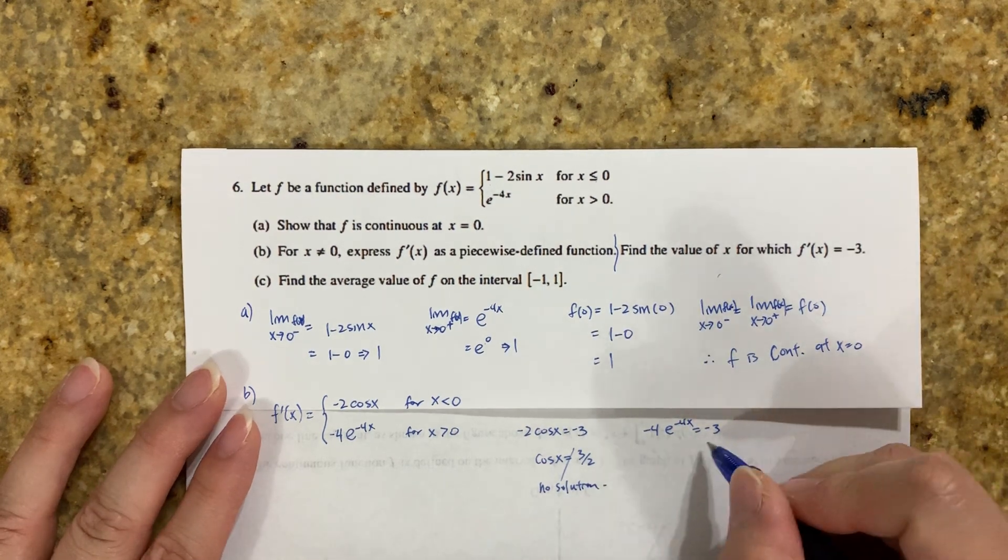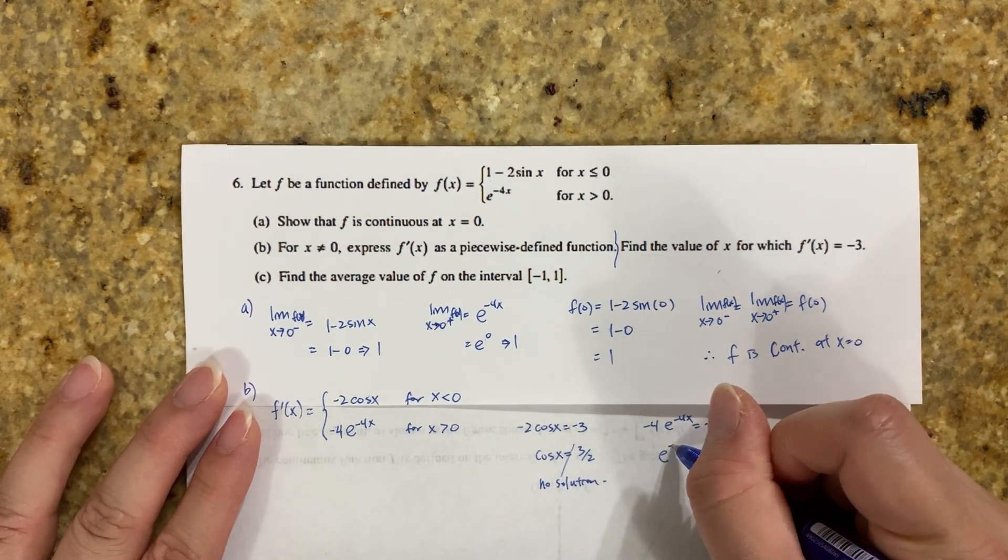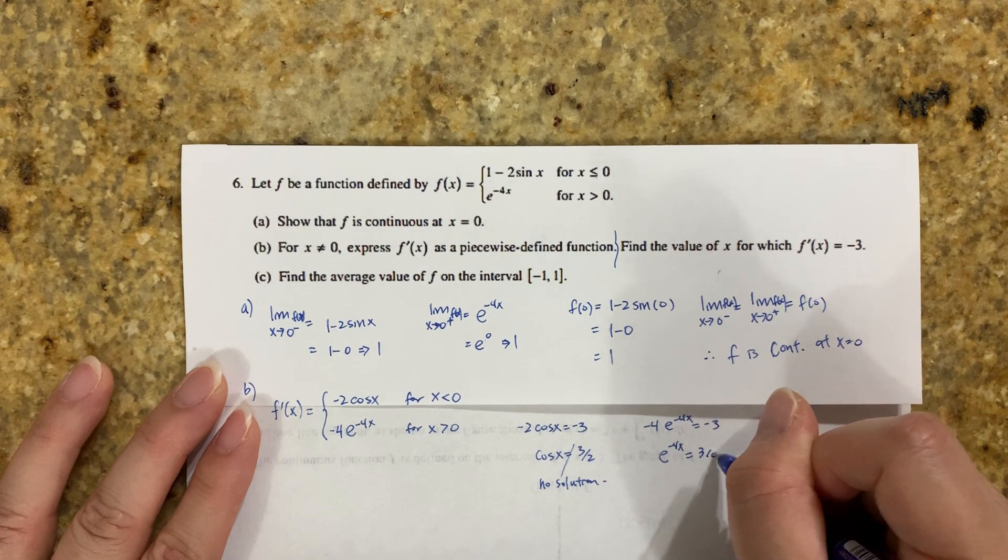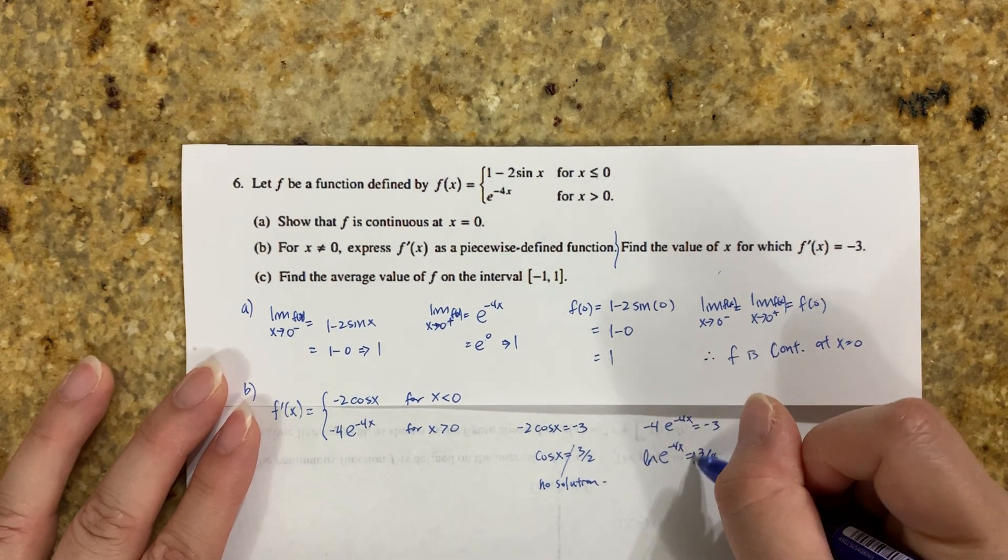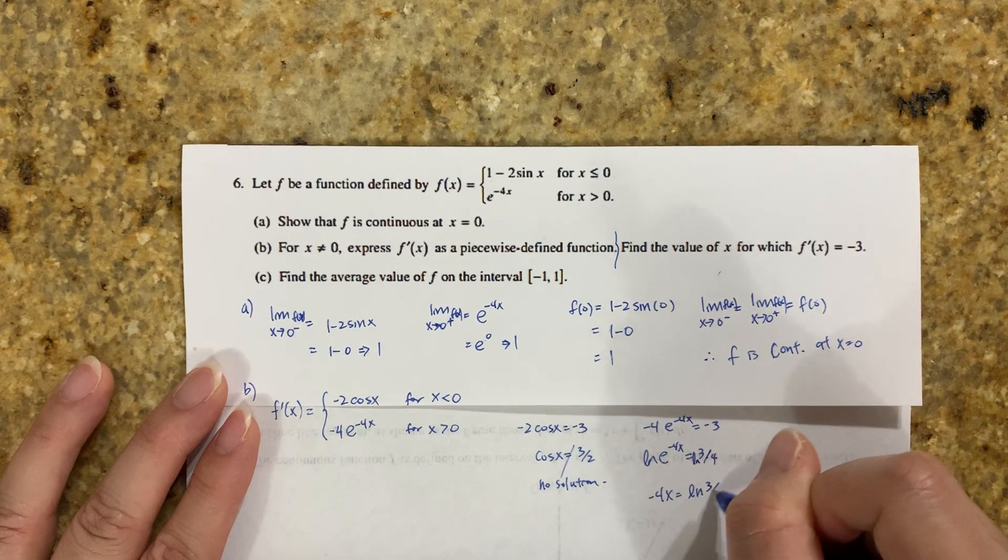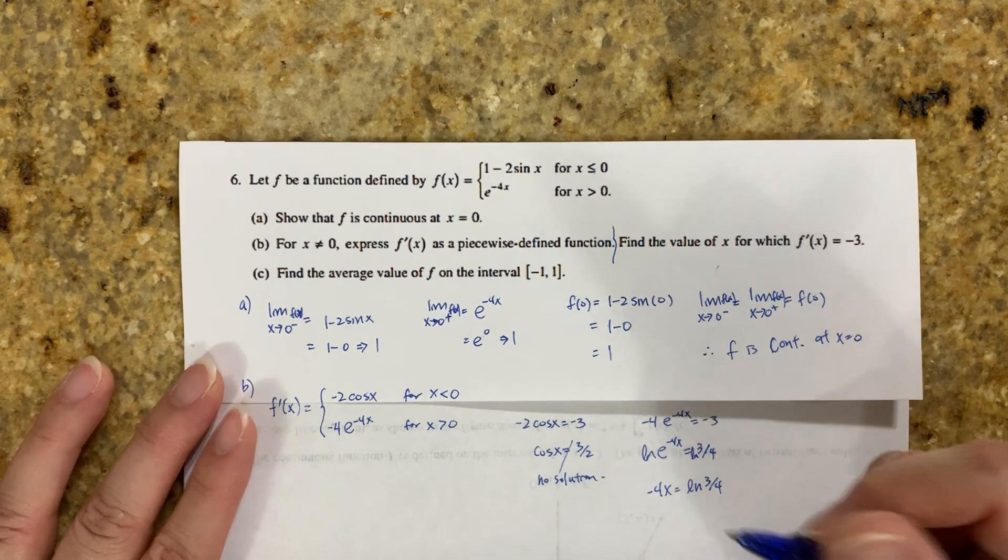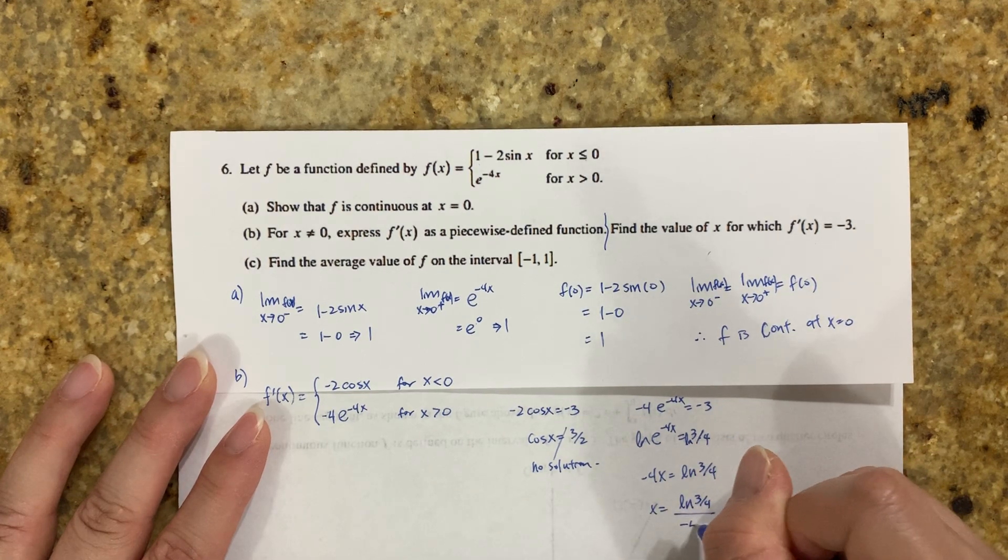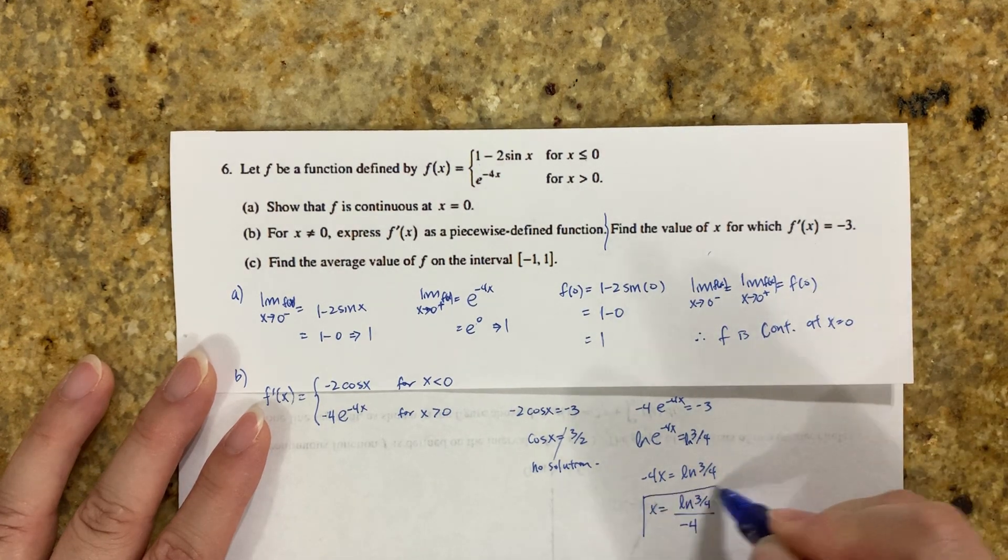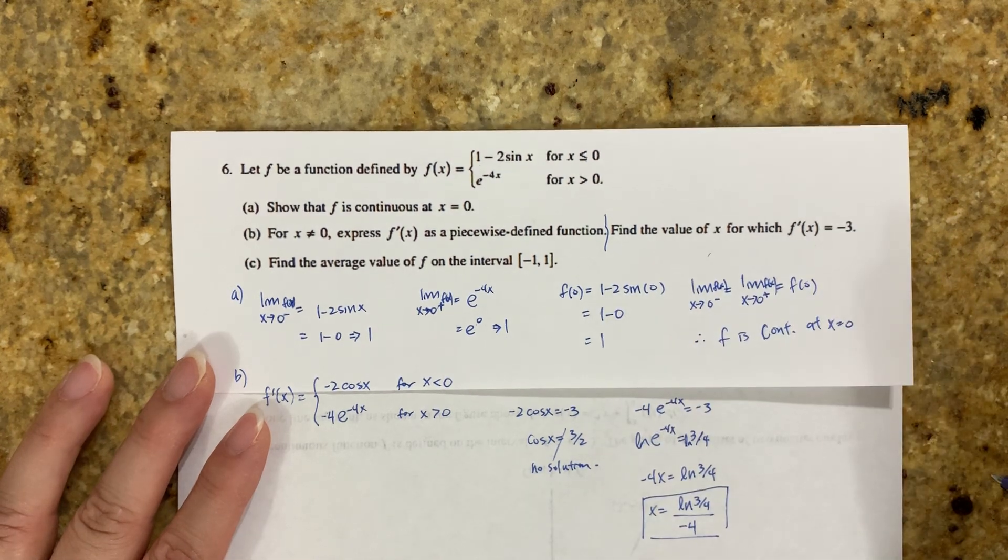For the other equation, divide by -4 to get e^(-4x) = 3/4. Take natural log of both sides: -4x = ln(3/4). Divide by -4, so x = ln(3/4)/(-4). This is the value of x where f' = -3.